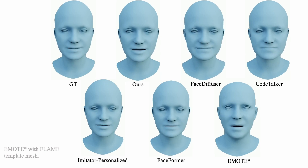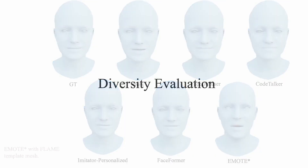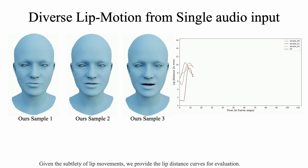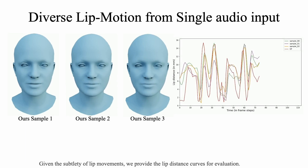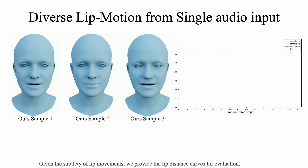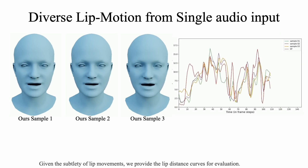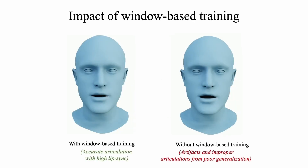Our method can synthesize facial motion that matches or surpasses the performance of existing state-of-the-art approaches. In addition, our work can also synthesize diverse lip and head motions. The window-based training enables our face motion generator to synthesize 20-second-long motion sequences, even though it is trained on just one-second-long motion segments. In addition, this also improves generalization and lip sync quality, thus minimizing artifacts.